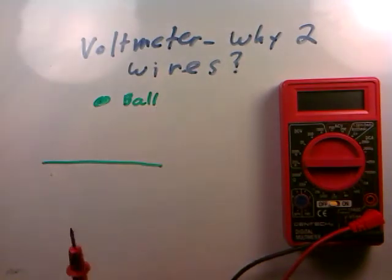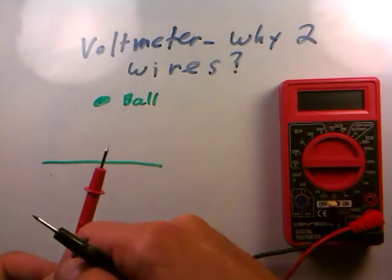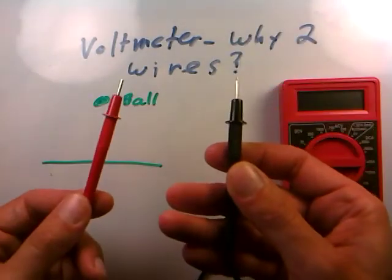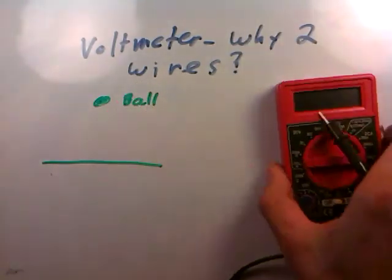I think it's probably more intuitive for current measurements because obviously you need the current to go into the meter and then come back out of the meter. But for voltage measurements, why two? So we can figure that out.